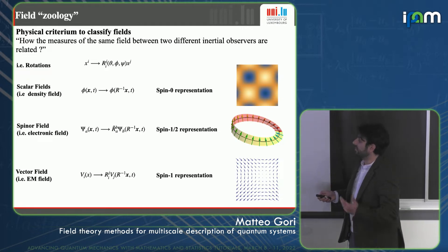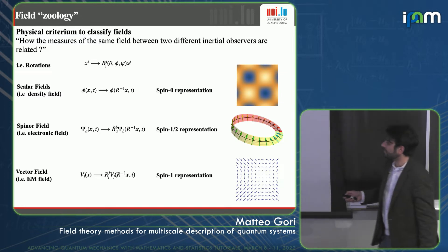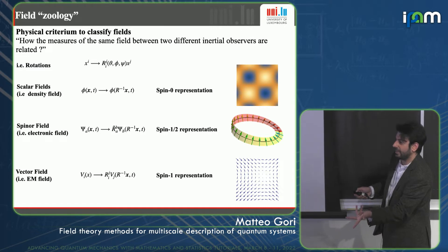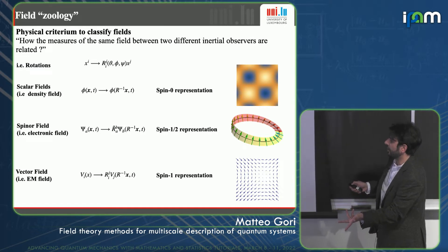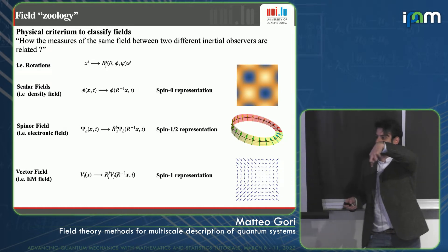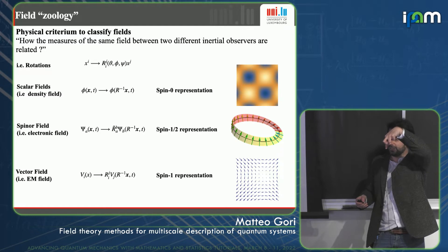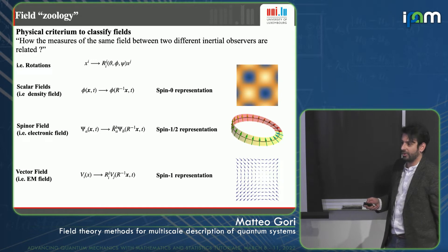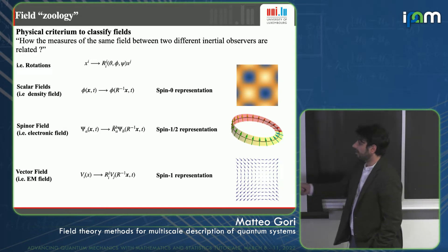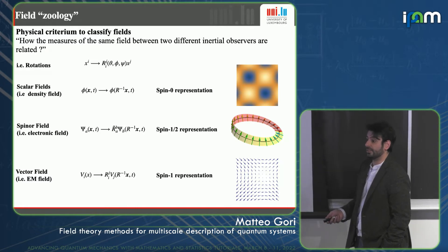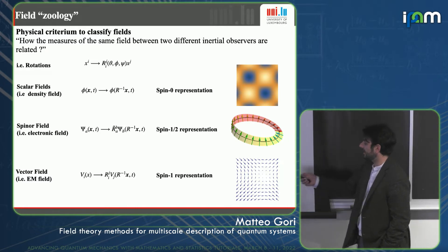We also have spinor fields like the electronic field, which transform in a strange way: when you rotate your system, they don't return to their original position — it's like a Möbius strip. You need to rotate 720 degrees to return. There is no classical realization of spin-1/2 fields. Vector fields like the electromagnetic field transform as spatial coordinates under rotation, taking the spin-one representation.